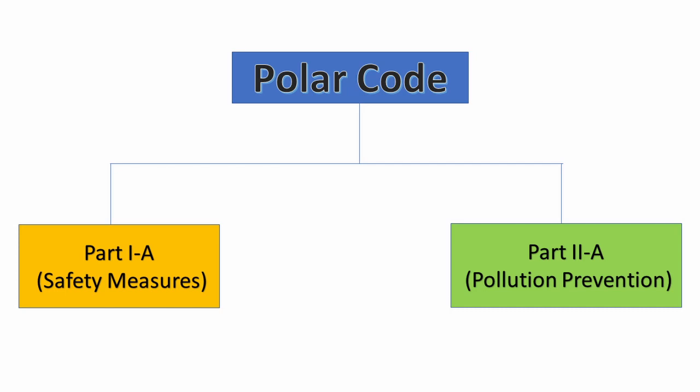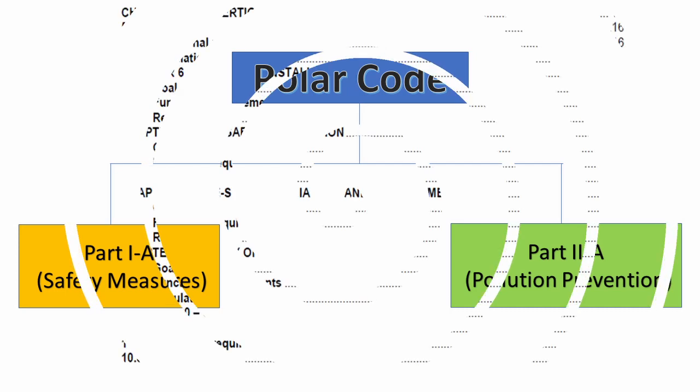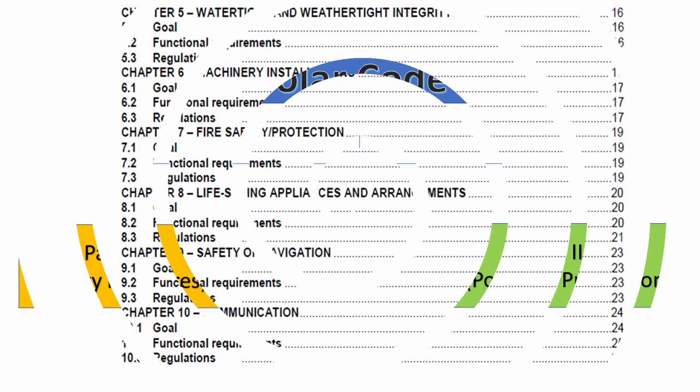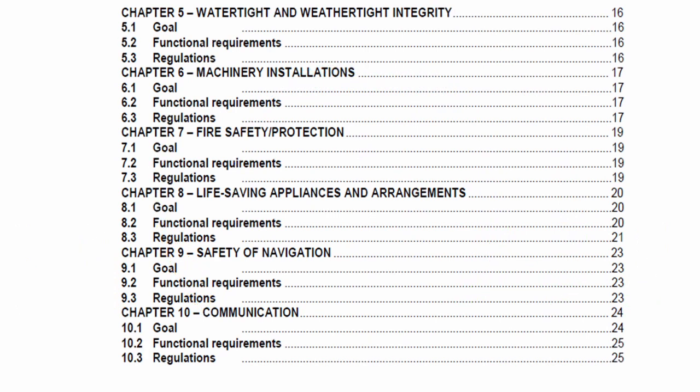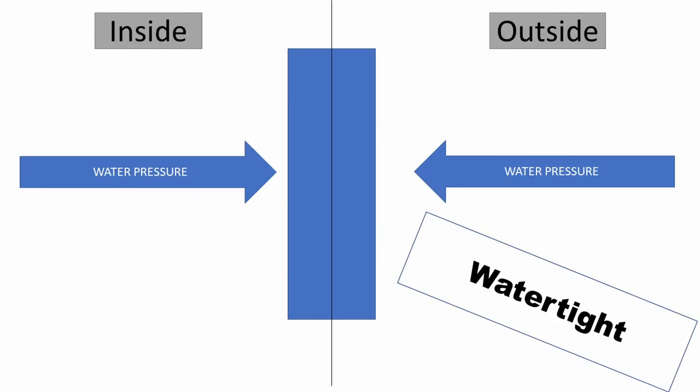Moving on, let us talk about Chapter 5: Watertight and Weathertight Integrity. First of all, I hope you have a good knowledge about the difference between watertight and weathertight. Watertight fittings have the ability to withstand water pressure from both sides, and watertight fittings will usually be present below the waterline of the ship.